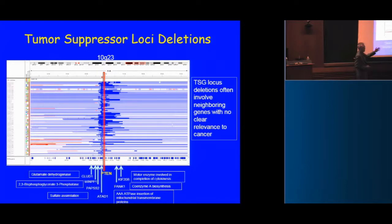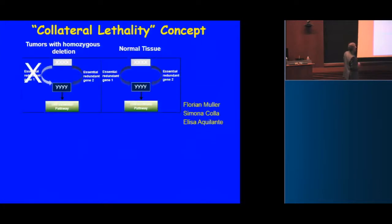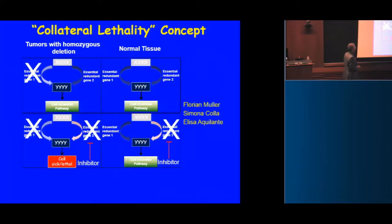These important housekeeping genes are parts of multi-membered families, so cells can survive because of redundancy from other family members. We thought there might be an opportunity to exploit the fact that you're deleting these other genes, and that might confer cancer-specific vulnerabilities. This concept we've dubbed 'collateral lethality' — the deletion in a cancer cell is survivable because of a redundant gene elsewhere, but pharmacologic or genetic extinction of that second element leads to a cell-lethal situation, while normal cells remain unaffected.